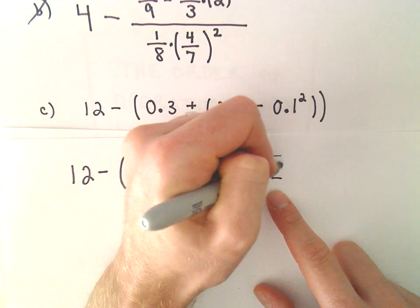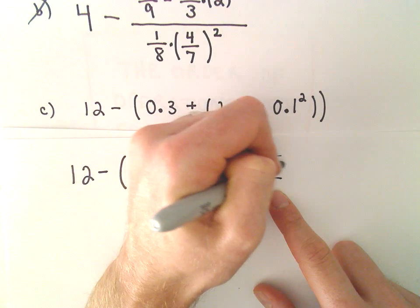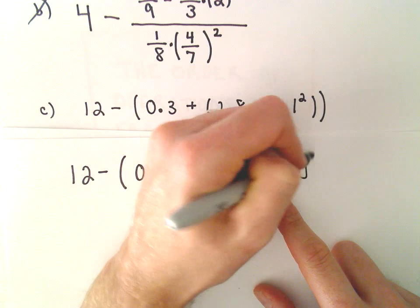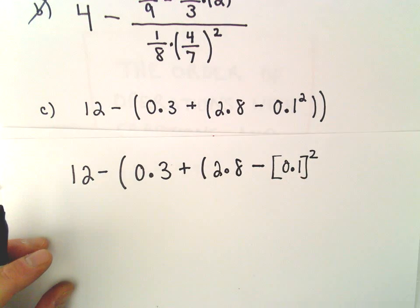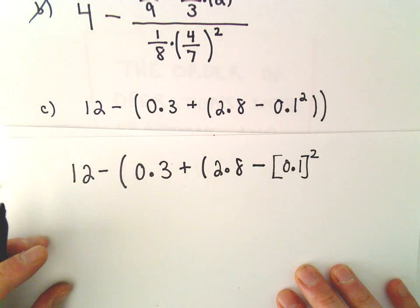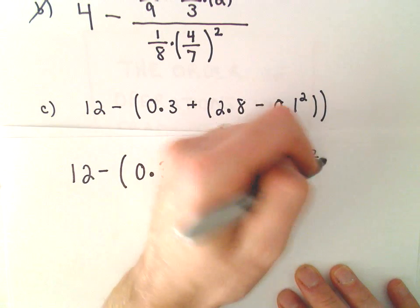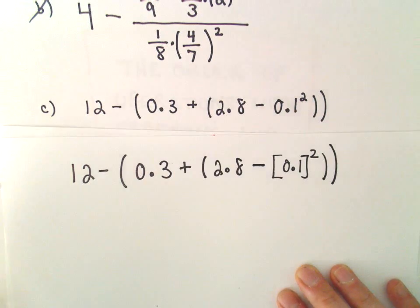The only number that's being squared is the 0.1, okay? So we'll have to be careful about our sign issues there. But then let's close off the parentheses, close off the parentheses.